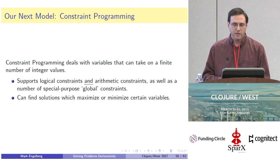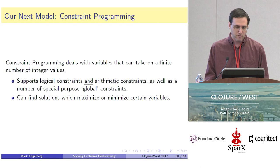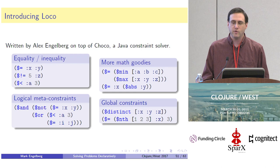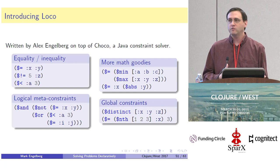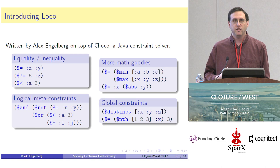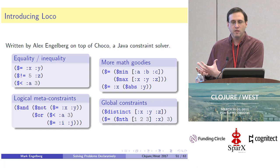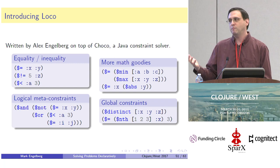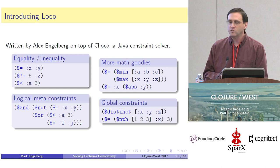Another interesting thing you can do with constraint programming solvers is certain kinds of optimization by maximizing or minimizing certain variables. Loco is a library in Clojure written by Alex Engelberg. It sits on top of Choco, a Java constraint solver, and has a very similar structure to the other two libraries — it uses the power of Clojure to let you make data structures representing your problem model. You pass it to the solver, which does a lot of work behind the scenes creating temporary variables, passes it into the solver, and returns results to you in a consumable Clojure form.